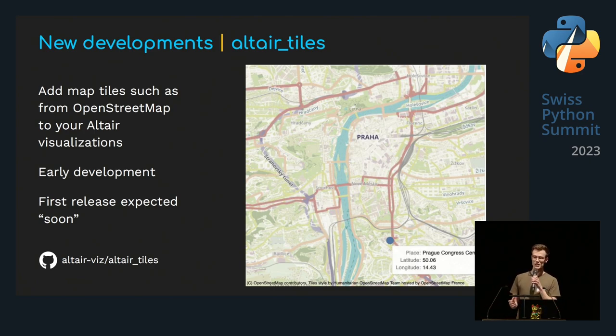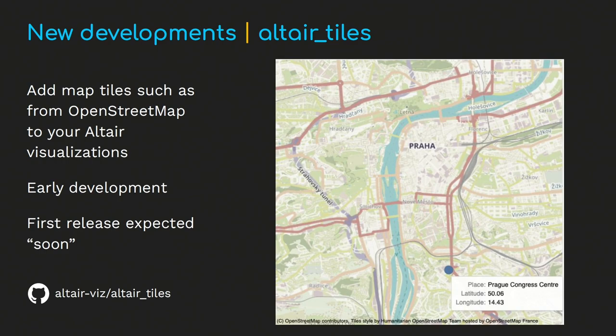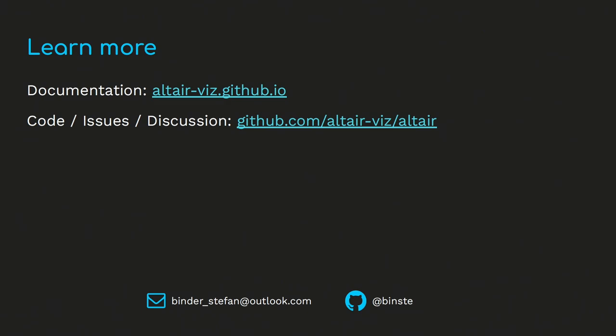Another thing I've been personally working on is Altair tiles — we love maps, we've seen a few already today. Altair tiles gives you the ability to add base maps, for example from OpenStreetMap, to your Altair visualization in a very easy and convenient way. Caveat: it's in early development, first release not out yet but expected soon. You can find the documentation there, file issues on GitHub — that's it from my side, thank you.